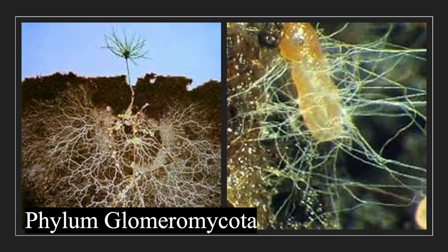Glomeromycota are mostly mycorrhizal, forming symbiotic relationships with plants. These fungi extend to reach plant roots, helping with water and nutrient absorption, while the plant provides them with sugars. This is known as a mutualistic relationship — both organisms benefit from having each other.